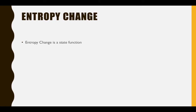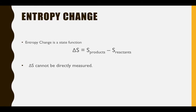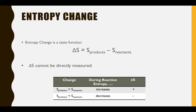Entropy change is a state function, which means it only depends on the initial and final conditions. Therefore, we can calculate entropy change by subtracting the entropy of the reactants from the entropy of the products. It's not possible to measure delta S directly — there's no entropy-o-meter. However, we can predict from a balanced equation whether entropy is increasing or decreasing. When products have more entropy than reactants, delta S is positive. When products have less entropy than reactants, delta S is negative. Much like negative enthalpy changes are thermodynamically favorable, positive entropy changes are thermodynamically favorable — processes that increase entropy tend to be more favored.